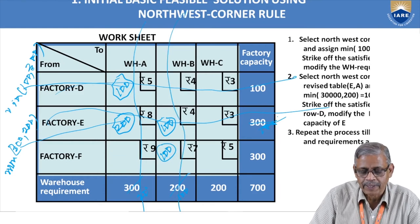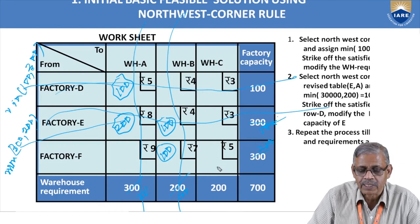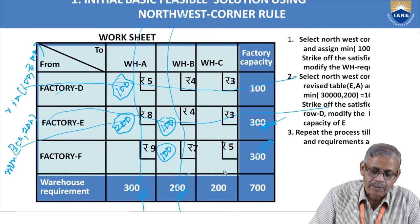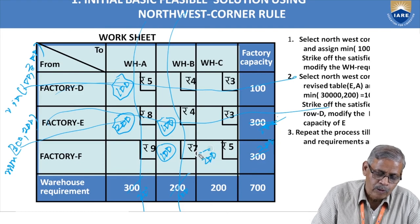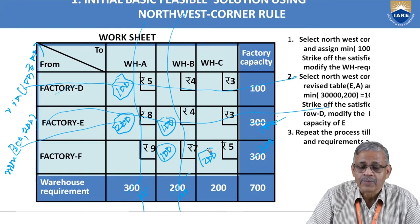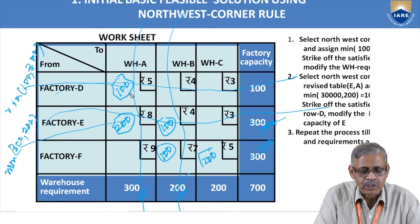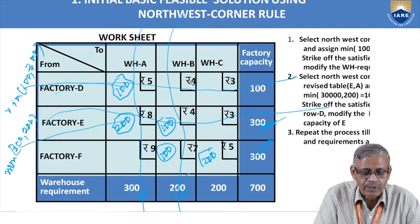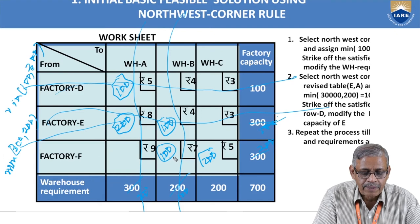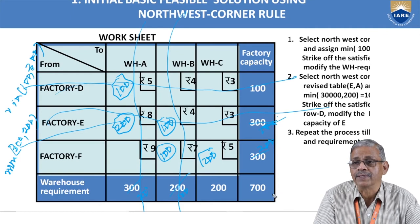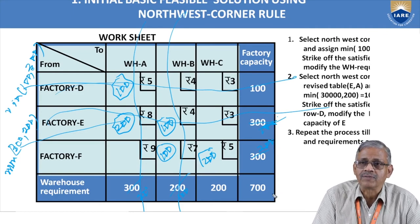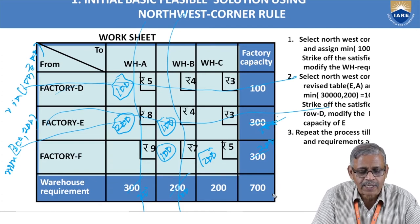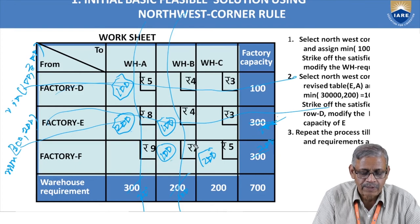Row E is now exhausted. We are left with 2 cells. The North-West cell is FB. The minimum of 100 (remaining warehouse B demand) and 300 (factory F supply) is 100, so assign 100 to FB. Column B is satisfied; factory F has 200 remaining. The last cell is FC with 200 supply and 200 demand — assign 200. The total cost is: 100×5 + 200×8 + 100×4 + 100×7 + 200×5.